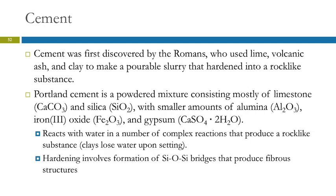There are different kinds of cements. Portland cement is a powdered mixture — mostly limestone (calcium carbonate) and silica, with smaller amounts of alumina, iron(III) oxide, and gypsum. It reacts with water through a series of complex reactions to produce a rock-like substance. Cement is different from a ceramic: when cement dries, it has undergone chemical reactions that you can't reverse by adding more water. When a clay dries, it just loses water, and you can regenerate the moldable clay by adding water back. Part of the hardening of Portland cement involves silicon-oxygen-silicon bridges that form fibrous structures holding things together.